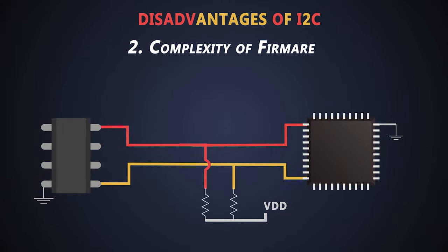In I2C communication, complexity of the firmware increases very much, because the master device has to support features like bus arbitration and clock stretching.